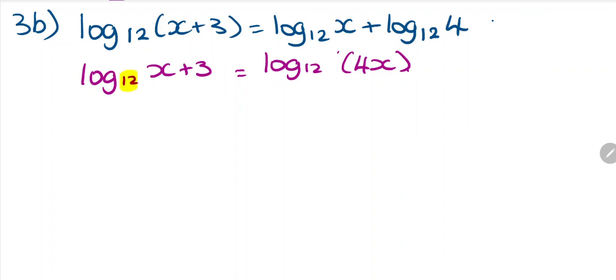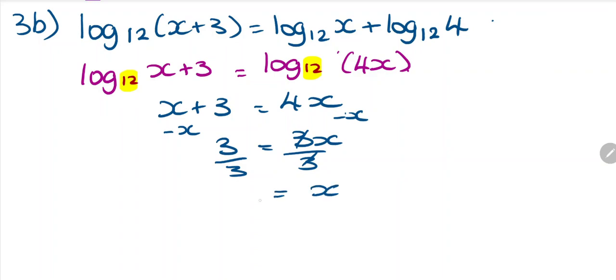Because we have log on both sides and using the one-to-one property, we can rewrite this as x plus 3 equals 4x. Now we're going to minus x from both sides, so I'll have 3 equals 3x, and we're going to divide both sides by 3, so x equals 1.